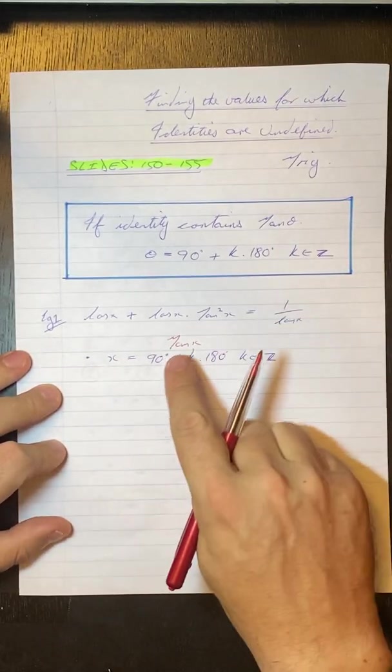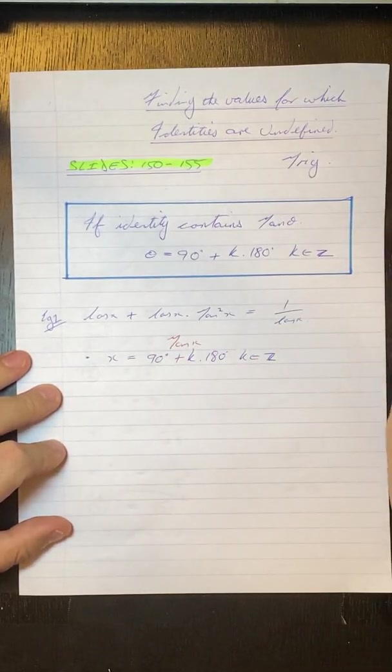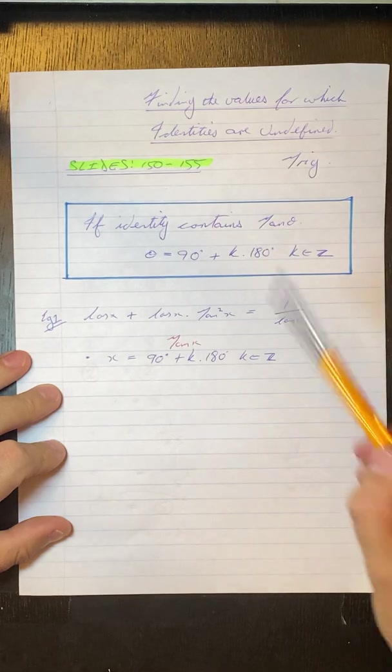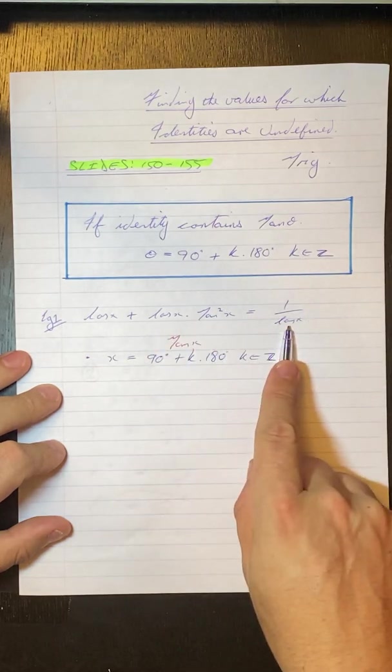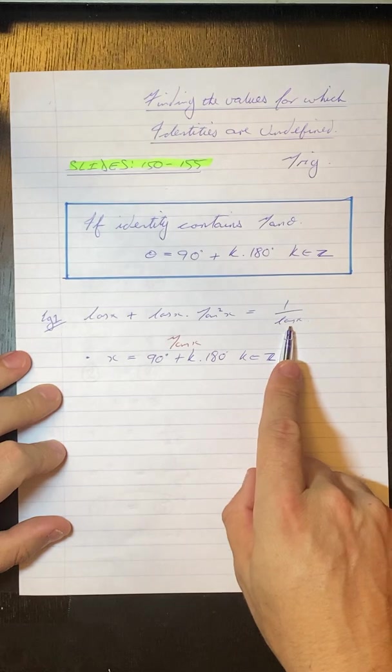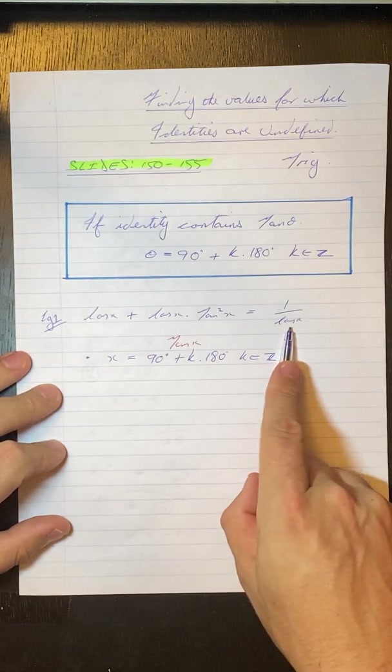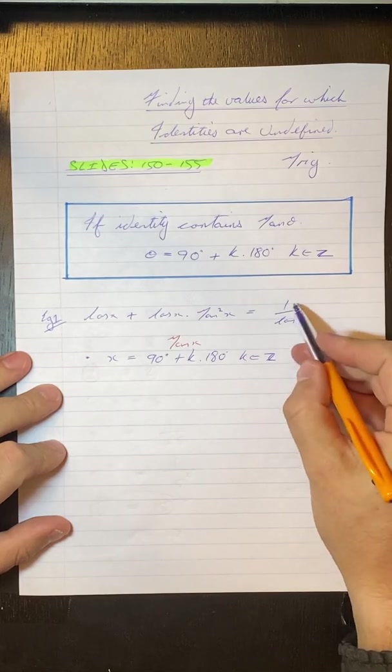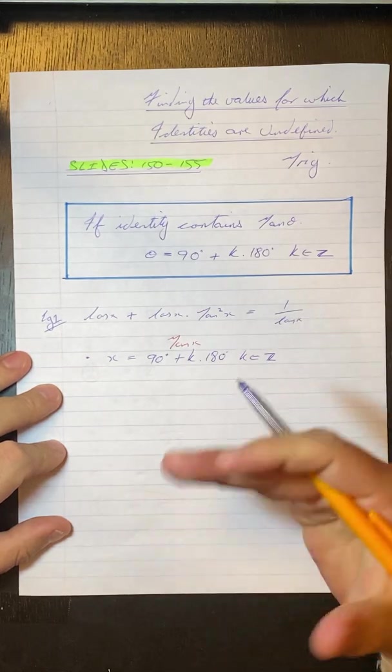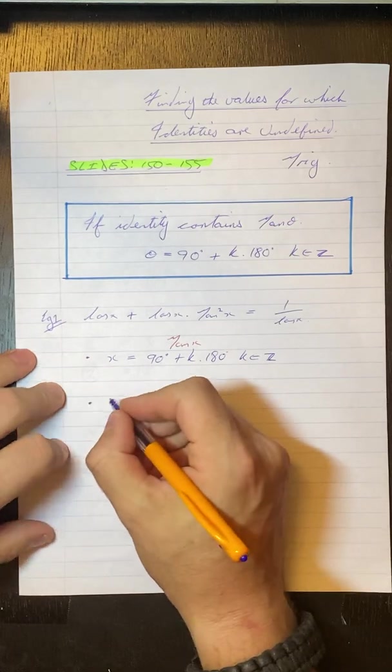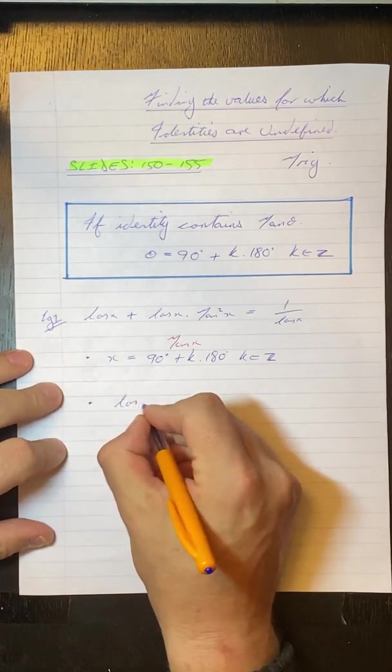Now you can also see that we have this thing over here, we have something in the denominator. That cos x cannot be equal to zero. If it's equal to zero, then we've got one divided by zero which is undefined.